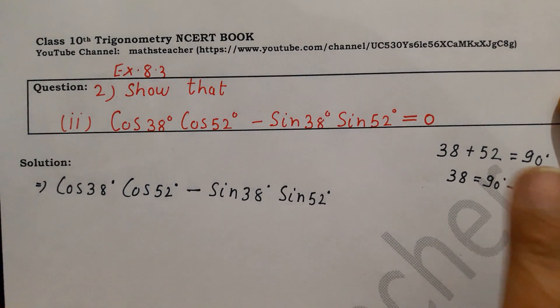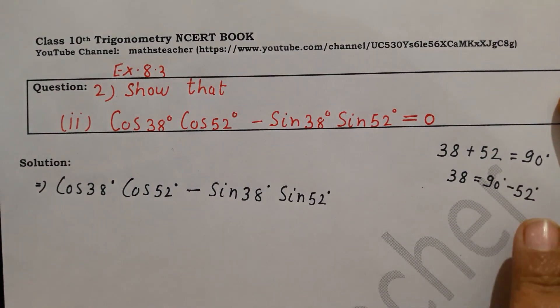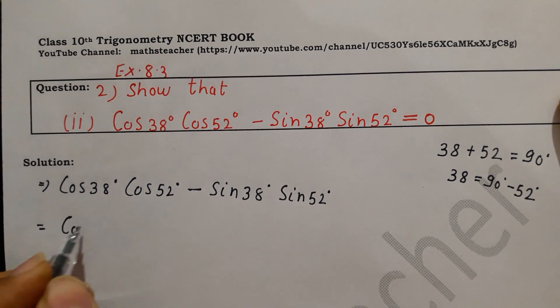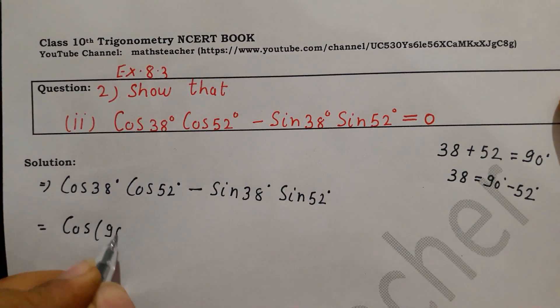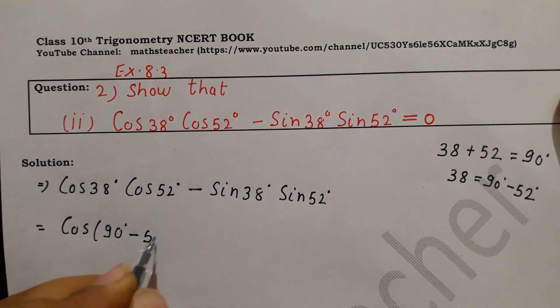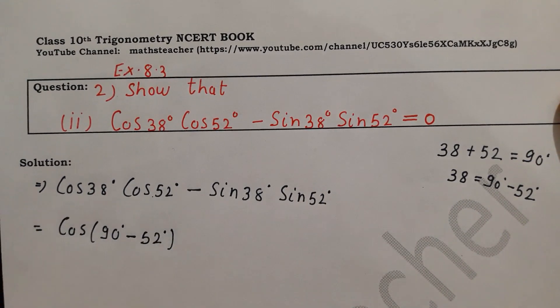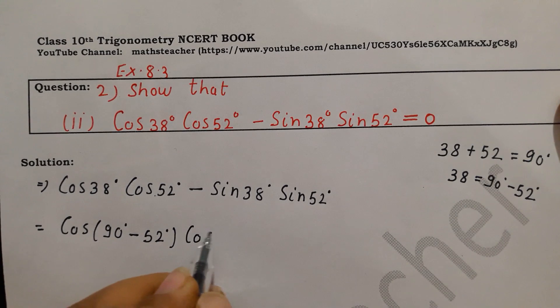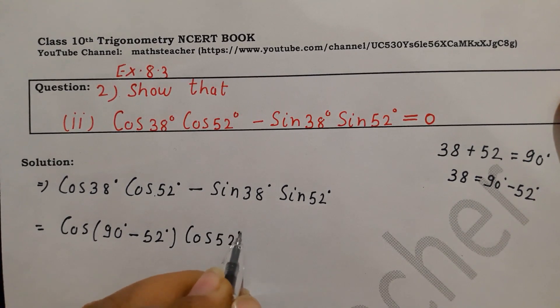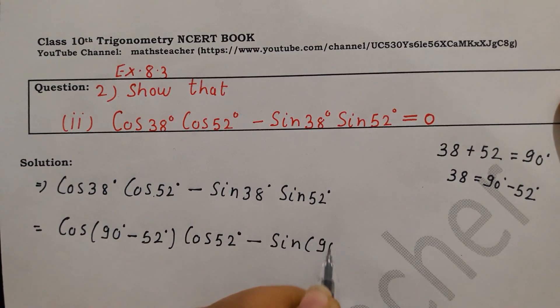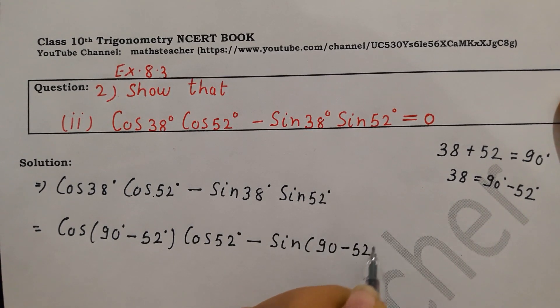Now we will change the angle. So there are two, it will be 90 degrees minus 52. So here cos 38 is 90 degree minus 52. So it will be a pairing. So the two are complementary, so we should change one. The other should not change.